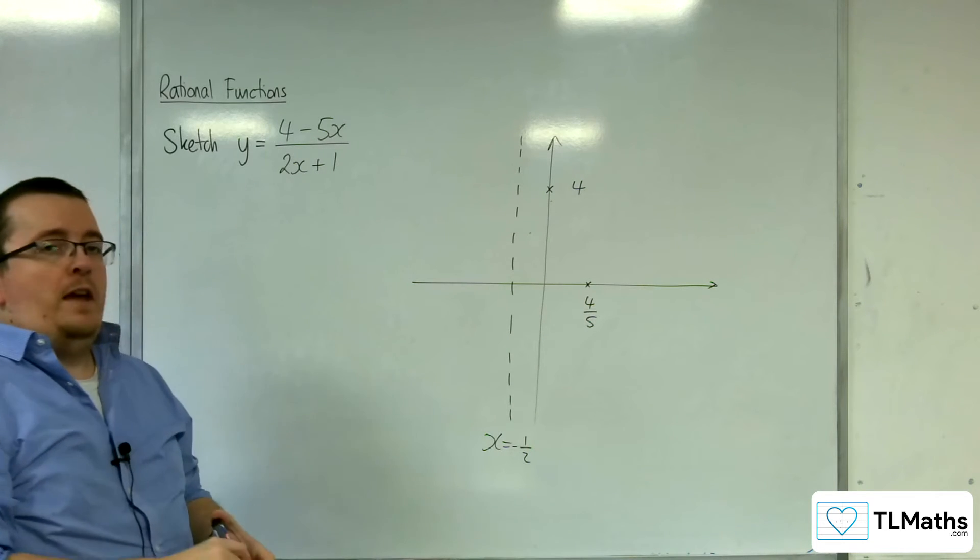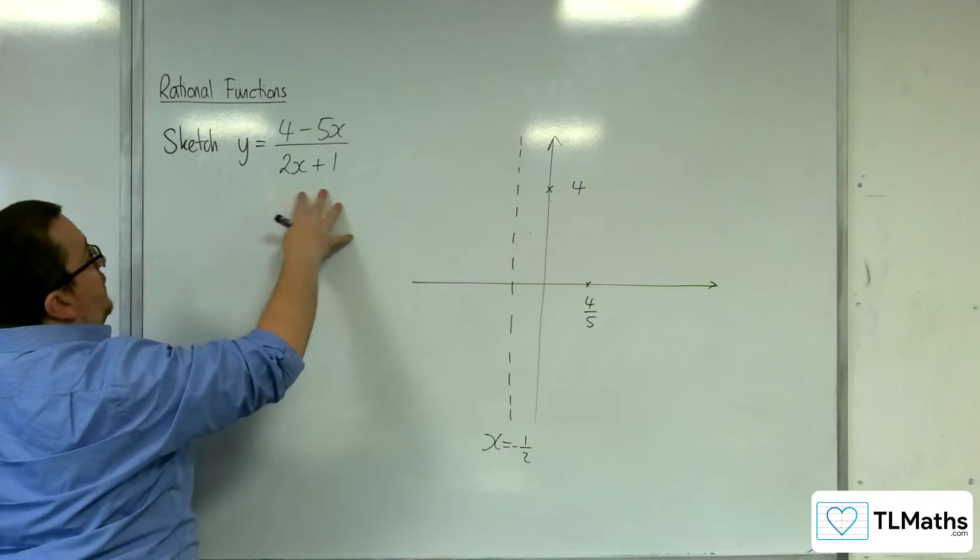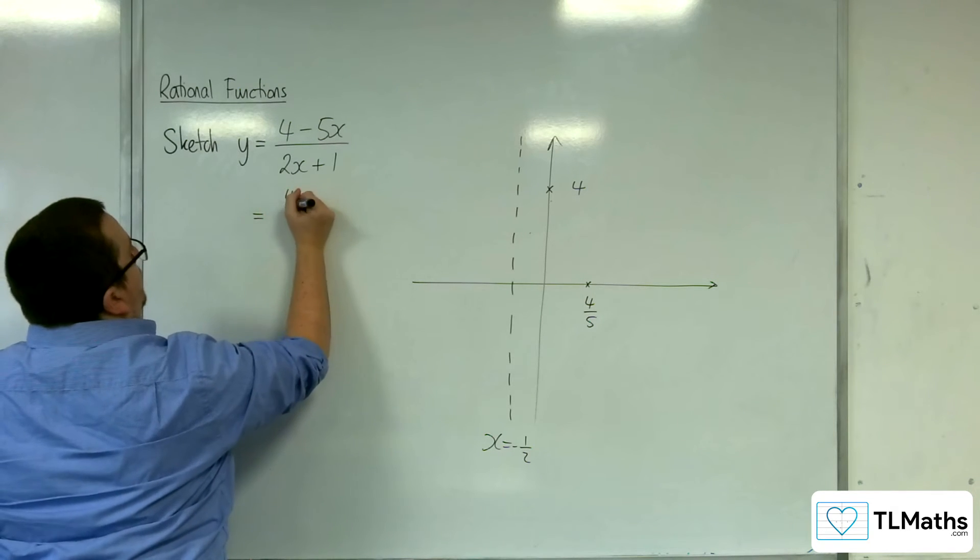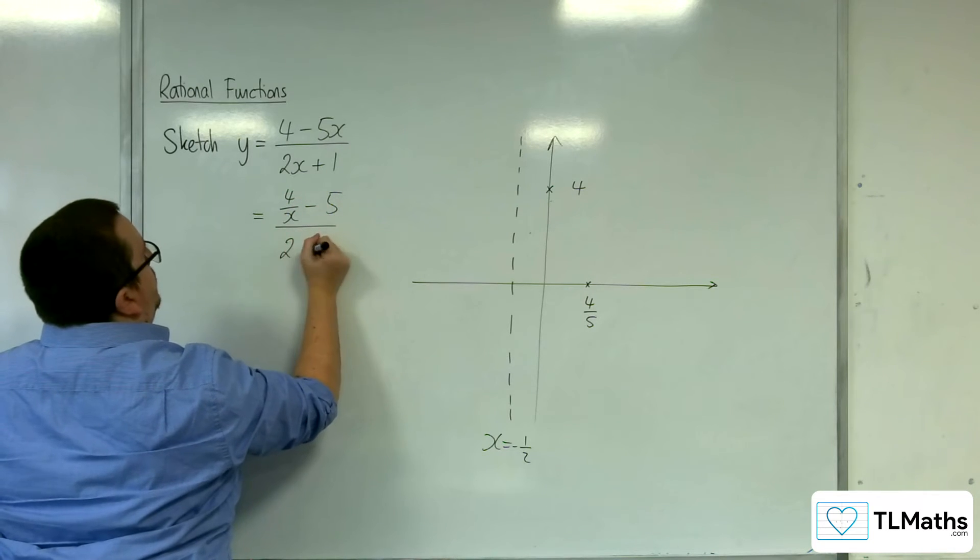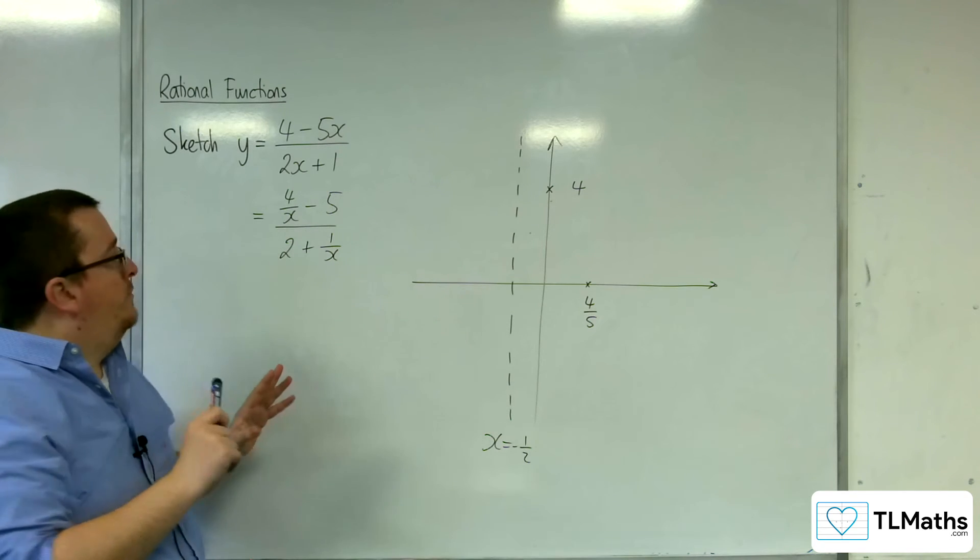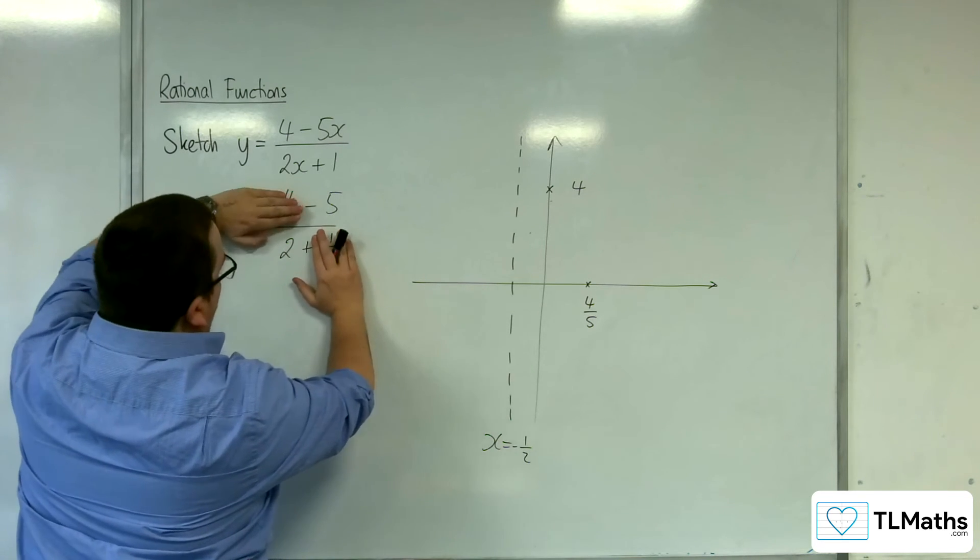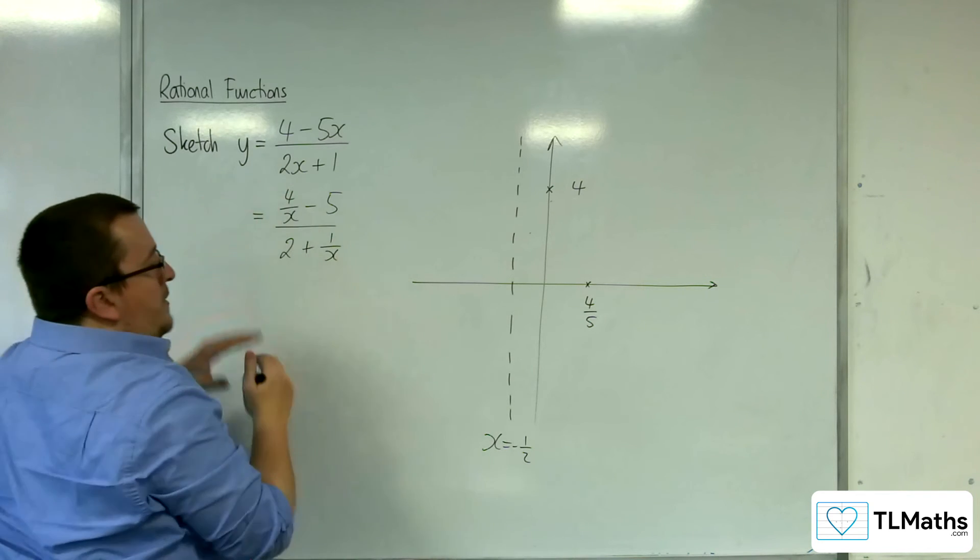And finally, where's the horizontal asymptote? We're going to divide on 1 by x. So 4 over x take away 5 over 2 plus 1 over x. So when x tends to infinity in either positive or negative direction, the fractions go to 0 and we'll have minus 5 over 2. So minus 5 halves.